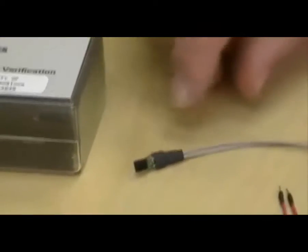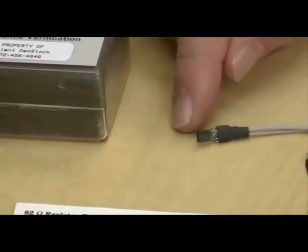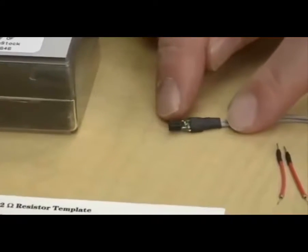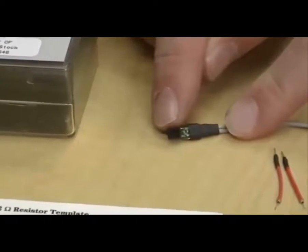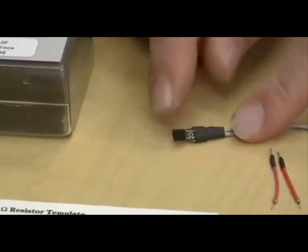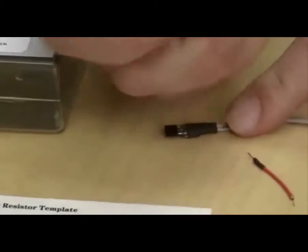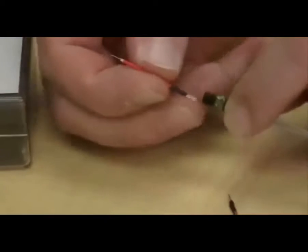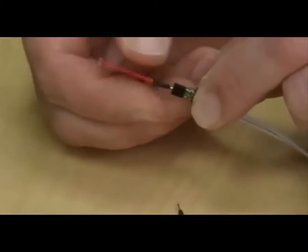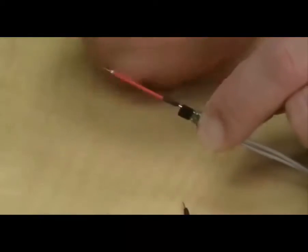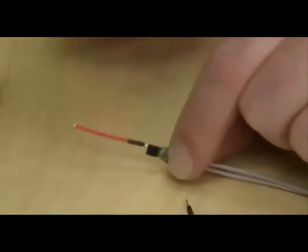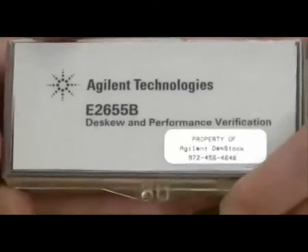To calibrate the E2678A or B socketed head, we have to actually put in the connections that we're going to use with our real life DUT. In some cases, we might use the damp wire accessories and we'll just insert them, basically like this, right into the left and right pins. And then we'll actually connect to the E2655 calibration fixture.